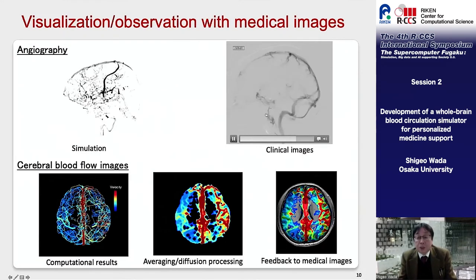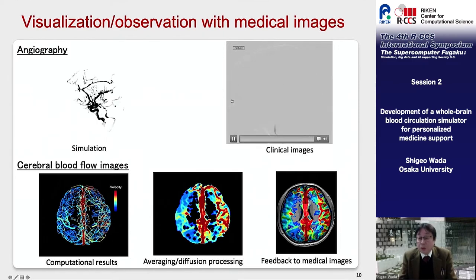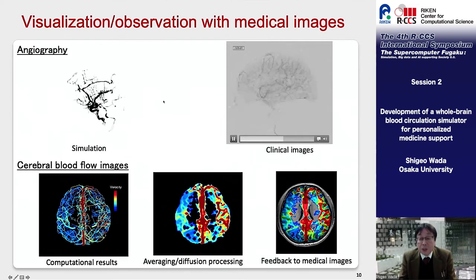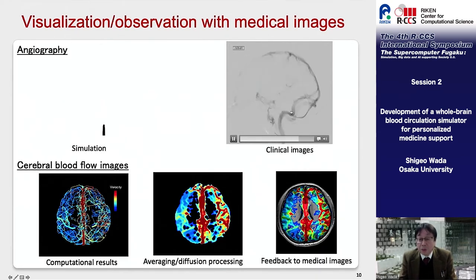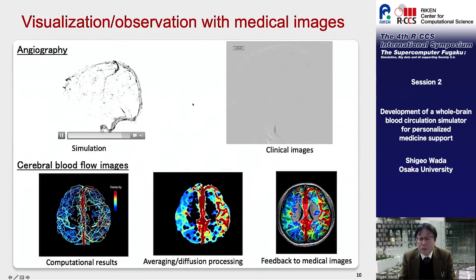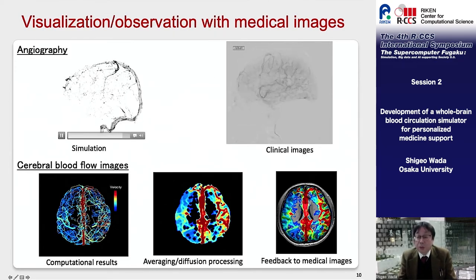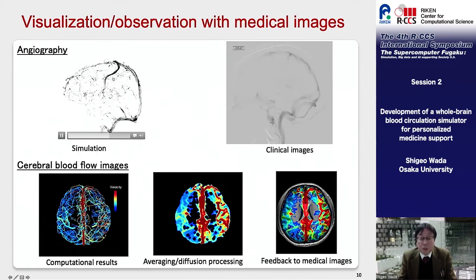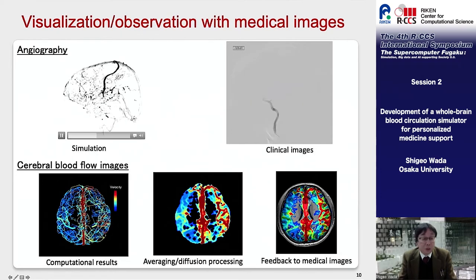This is a simulation result visualizing the transport of contrast medium injected from the carotid artery. This is compared with an actual clinical image of angiography, and similar results are obtained. However, since the capillary network is not considered in our model, a difference can be seen when the contrast image switches from arteries to veins.